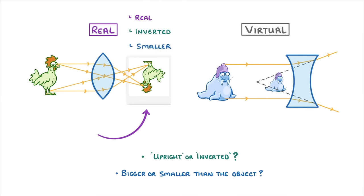Whereas in our example on the right, the image would be virtual, upright, and smaller.